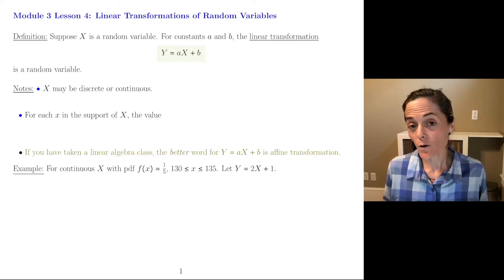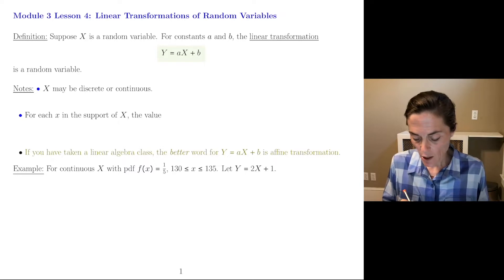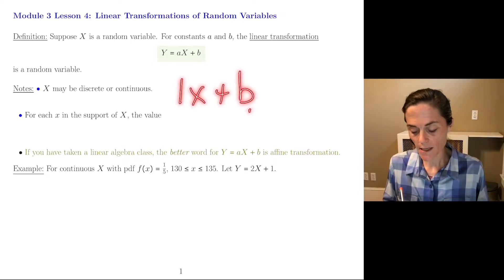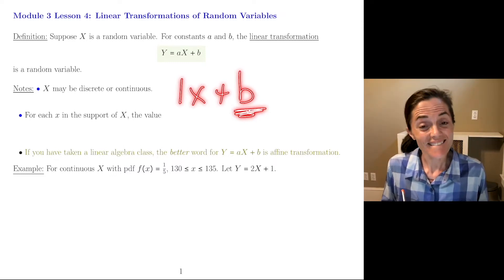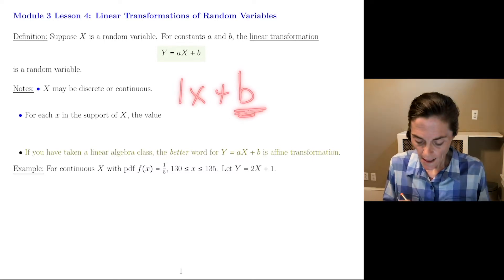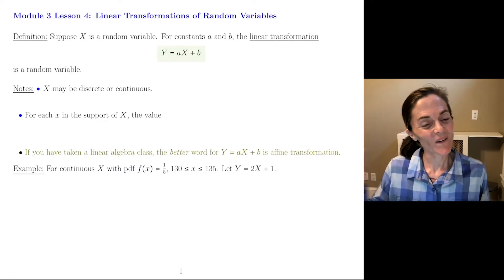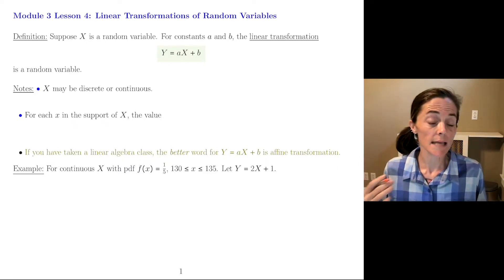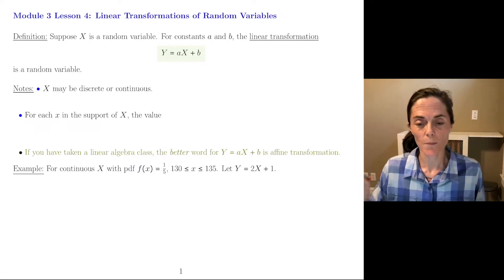So I have a few remarks. If you had say 1X plus B, this B is just shifting all of the values in your support. And generally this A is scaling. My first note is X may be discrete or continuous. We can still perform this linear transformation.